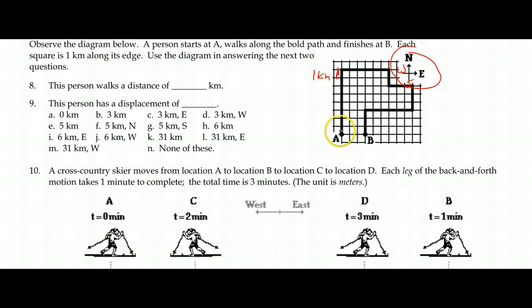First, let's count the distance traveled. That's just a running total of the ground covered. Counting each block: 1, 2, 3... all the way to 31 kilometers.